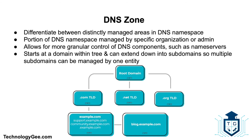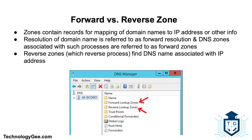DNS is broken up into many different zones, which differentiate between distinctly managed areas in the DNS namespace. A DNS zone is a portion of the DNS namespace managed by a specific organization or administrator, allowing more granular control of DNS components such as authoritative name servers. A DNS zone starts at a domain within the tree and can extend down into subdomains so that multiple subdomains can be managed by one entity.